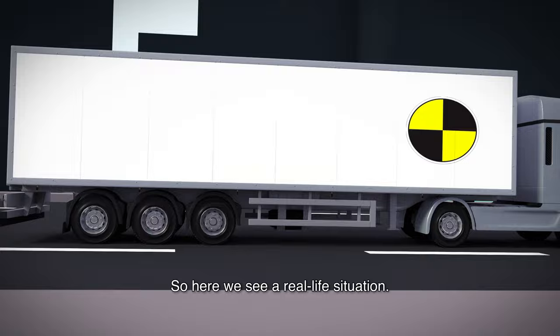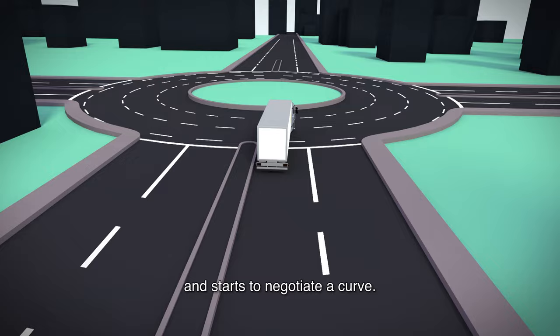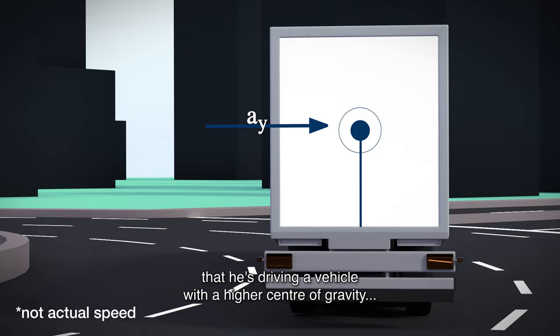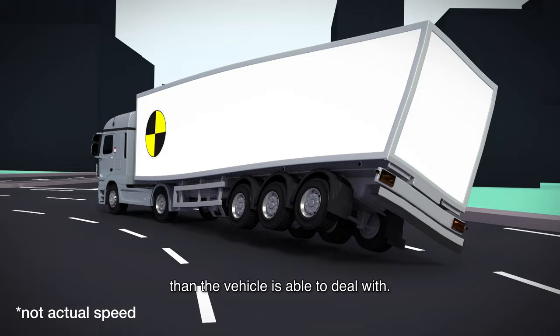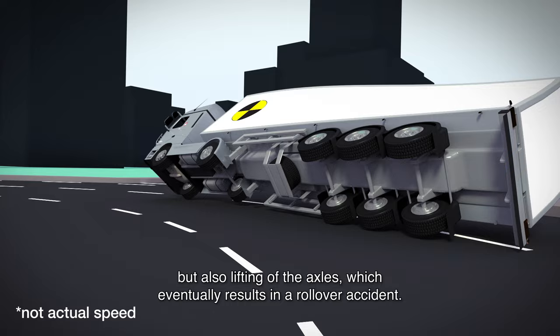So here we see the situation from real life. The tractor-semitrailer combination is approaching a roundabout and starts to negotiate a curve. The problem is that the driver didn't really count on the fact that he's driving a vehicle with a higher center of gravity, and he did not adjust the speed. This results in a lateral acceleration that is higher than the vehicle is able to deal with. We can see gradual increase of the roll angle, but also lifting of the axles, which eventually ends up in a rollover accident.